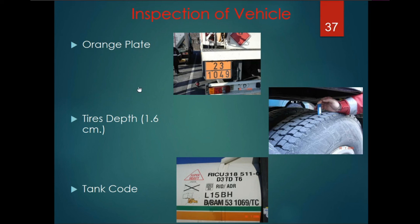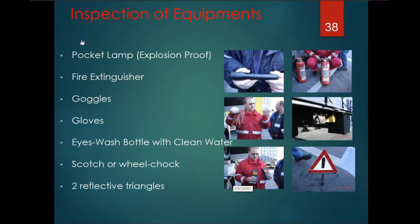Vehicle inspection: check orange plates, tire depth should be at least 1.6 cm, and tank codes. Required equipment includes pocket lamps, explosion-proof fire extinguishers, goggles, gloves, eyewash bottle with clean water, and two reflective triangles or wheel chalk.